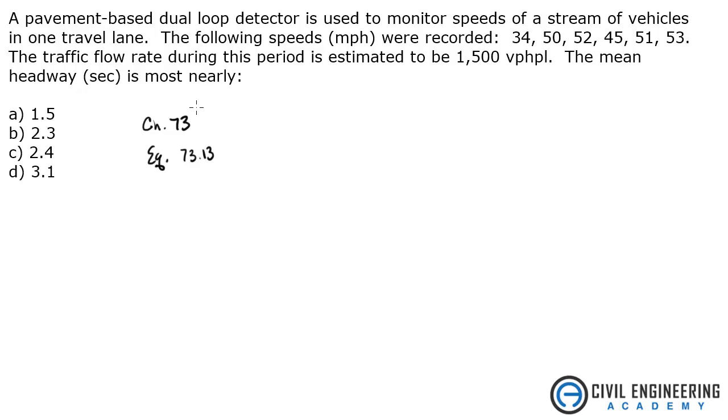And this tells me that headway is basically the time between successive vehicles. So we need to find the time between these vehicles. And the equation simply states that V in vehicles per hour is equal to 3600 seconds per hour divided by headway.